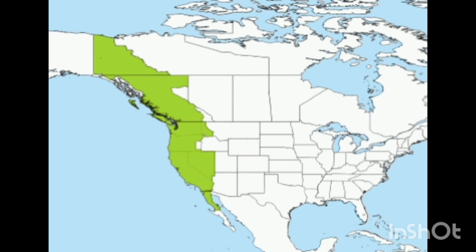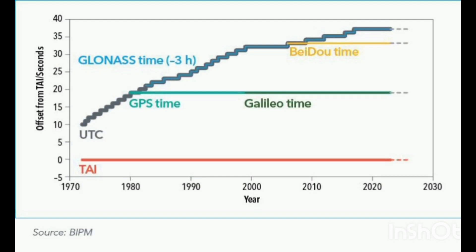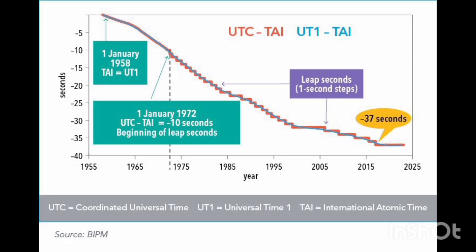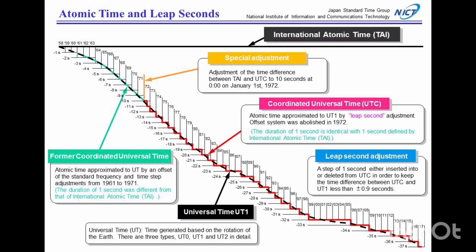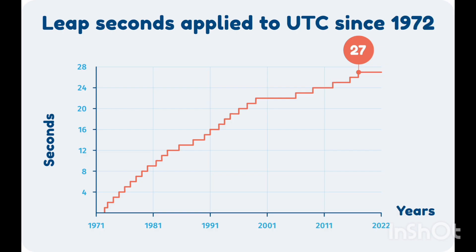Time zones are usually defined by differing from UTC by an integer number of hours, although the laws of each jurisdiction would have been consulted. Where subsecond accuracy was required, several jurisdictions have established time zones that differ by an odd integer number of half hours or quarter hours from UT1 or UTC. Current civil time in a particular time zone can be determined by adding or subtracting the number of hours and minutes specified by the UTC offset, which ranges from UTC minus 12:00 in the west to UTC plus 14:00 in the east.